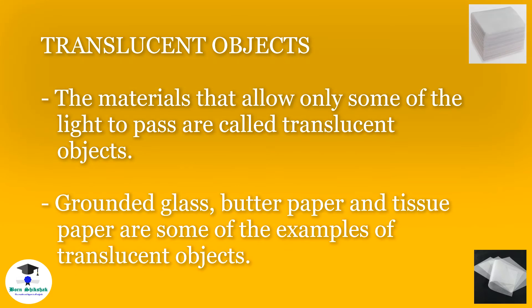Translucent objects. The materials that allow only some of the light to pass through them are called translucent objects. Grounded glass, butter paper and tissue paper are some of the examples of translucent objects.